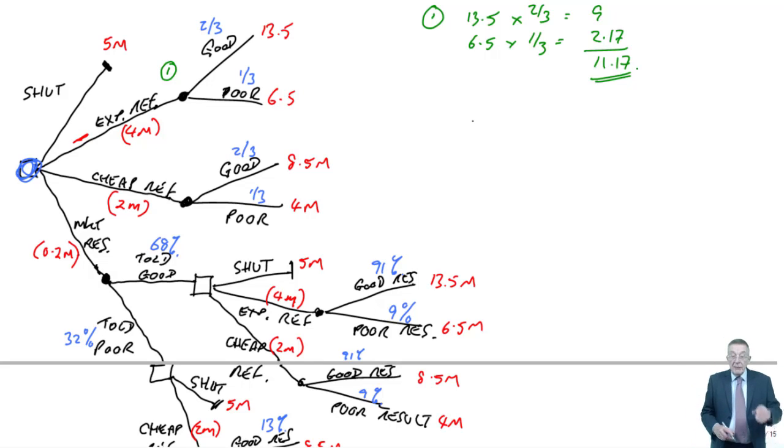Six point five times a third is two point one seven. Eleven point one seven. And so, I'm now going to say that if we do expensive, we will pay out four million, but we'll get an expected eleven point one seven million. So, I can now forget the thirteen point five and six and a half, effectively, my choice so far is either shut and get five million, or do expensive, which gives us eleven point one seven minus four million, which will give us seven point one seven million. But the uncertainty, I can now forget, I've replaced it with expected value.